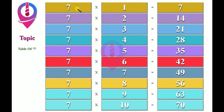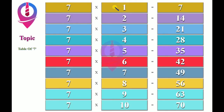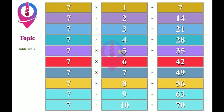7 1's are 7. 7 2's are 14. 7 3's are 21. 7 4's are 28. 7 5's are 35.